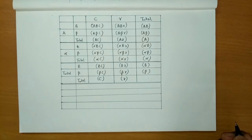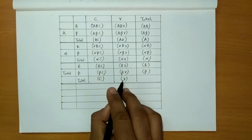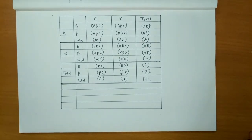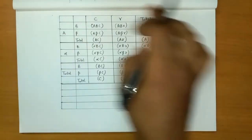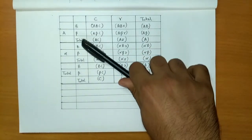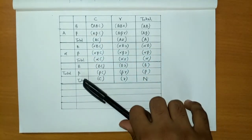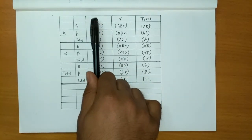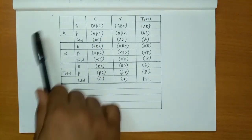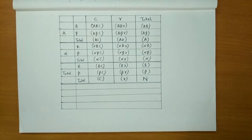We know that A plus Alpha, B plus Beta, and C plus Gamma all result in N. So C plus Gamma equals N, and B plus Beta also equals N. This is how you prepare the contingency table for three attributes — divide into three blocks A, Alpha, Total; write B, Beta, Total columns; add C, Gamma, Total; then fill up the corresponding frequencies.